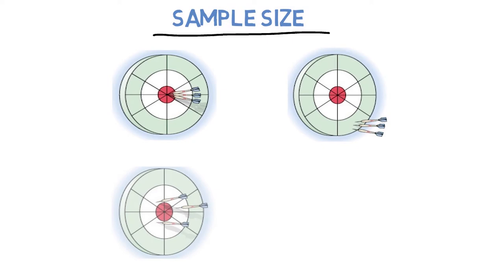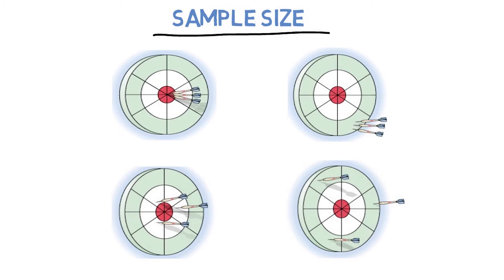The accuracy refers to how close your measurement comes to the true value without any systematic bias. Remember, systematic bias is built-in error which makes all measurements wrong by a certain amount. The precision refers to how close replicate measurements are to each other. You need data that are reproducible. Based on this diagram, we can see the difference between accuracy and precision.